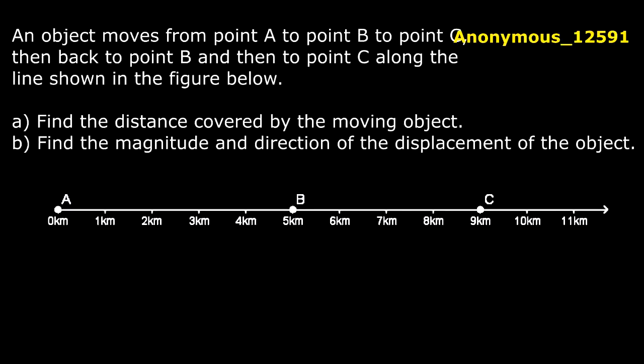In this question, an object moves from point A to B to C, then back to point B and then to C along the line shown in the figure below. Now the question arises: find the distance covered by the moving object.